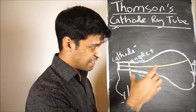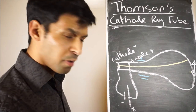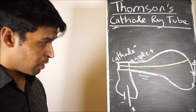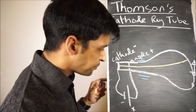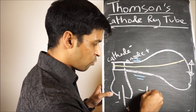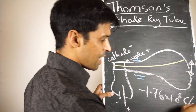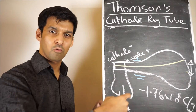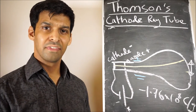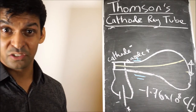By playing around with the electric field and the magnetic field he was able to determine something called the charge-to-mass ratio. He had to measure the angle of deflection and how far it traveled. He found that the charge-to-mass ratio was minus 1.76 times 10 to the 8 coulombs per gram. This tells us that the cathode ray is much, much smaller than the smallest known atom, which is hydrogen — in fact, over a thousand times smaller.